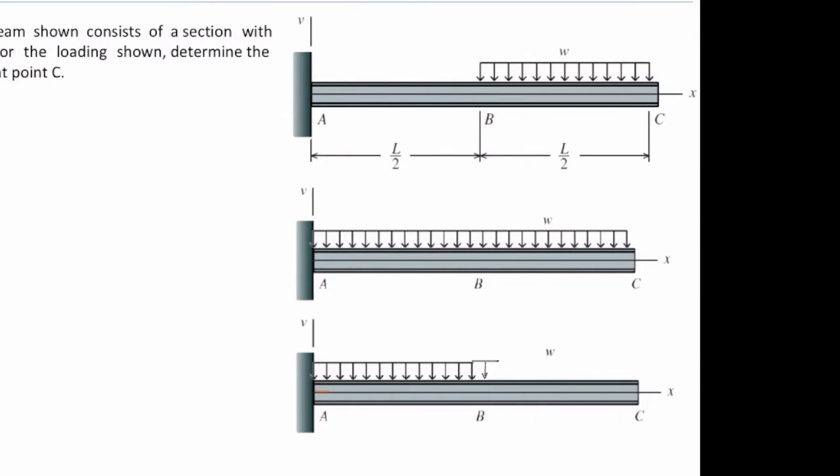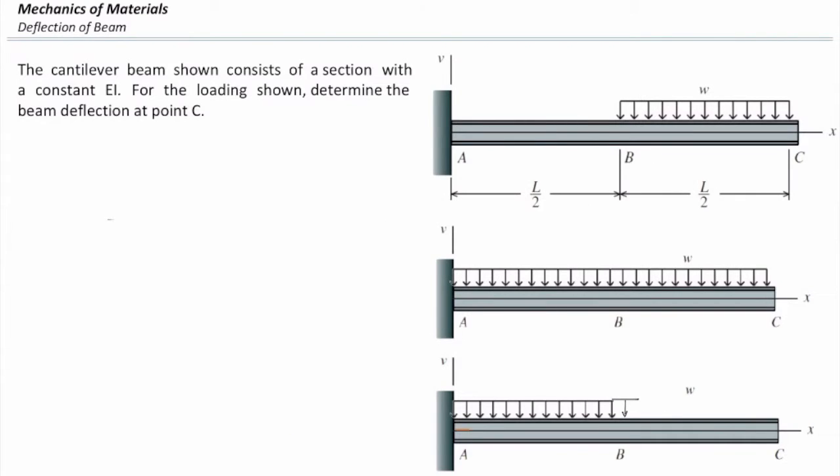So what we can do is we can consider one case which has loading for the entire length, and in the second case, we consider the loading which goes up to the half of the length of the beam, then subtract them from each other to determine how much is deflection at the right end. Does that make sense? Okay, let's do that.